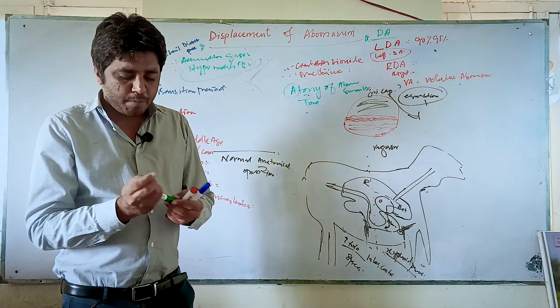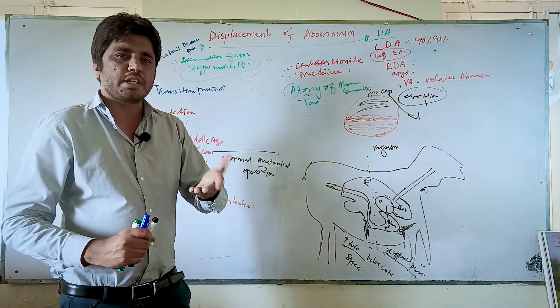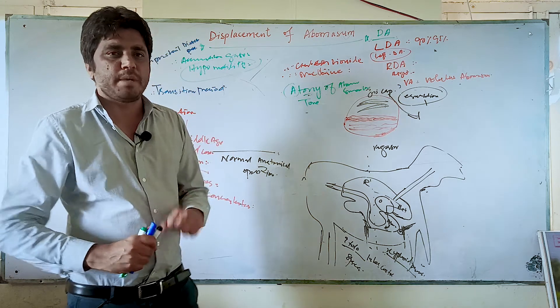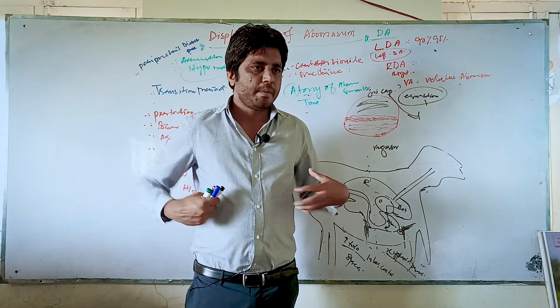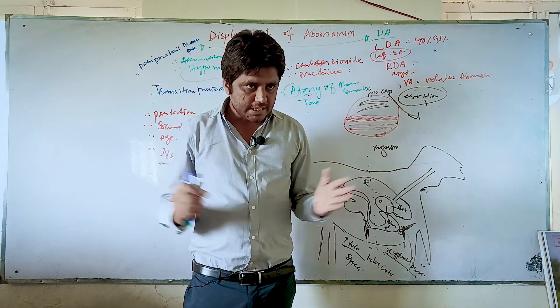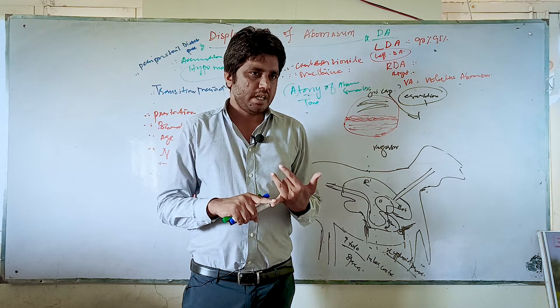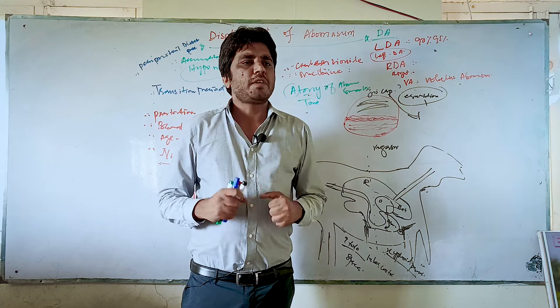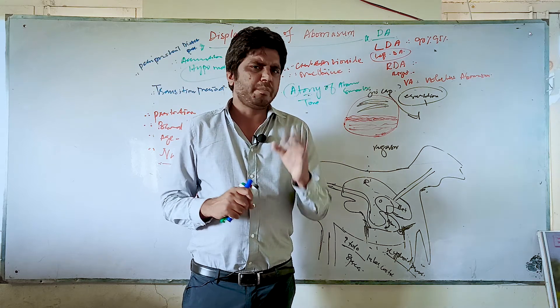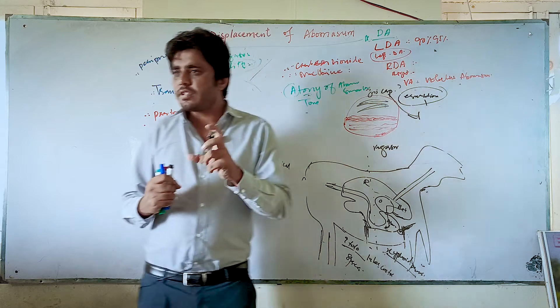So if there is parturition or just before parturition, if the animal shows signs like this, maybe the flank region of the animals may become more weak and go inside. And also you are having a loss in production. The eyes of the animal are sunken. Animals feel a little dorky, a little weak. So these are the symptoms of displacement of abomasum.